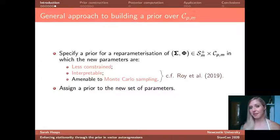Our approach to specifying a prior therefore is going to be to reparameterize the vector autoregression in terms of a set of new parameters and then to assign a prior to this new set of parameters. The new parameters that we end up with, we want the stationarity condition to translate to a condition which is much less restrictive in the space of the new parameters. We also want our new parameters to be interpretable so that the specification can be made in a way that's meaningful. And because we're unlikely to be able to work out the Jacobian of this new parameterization, we ideally want the new parameter space to be amenable to Monte Carlo sampling.